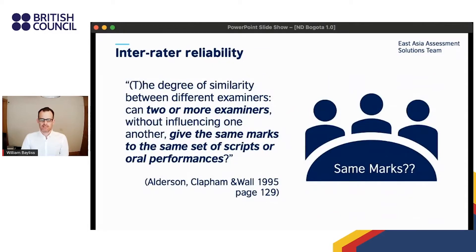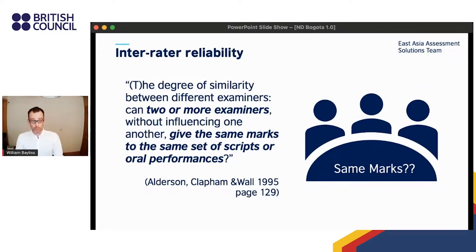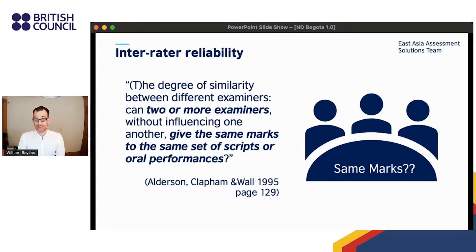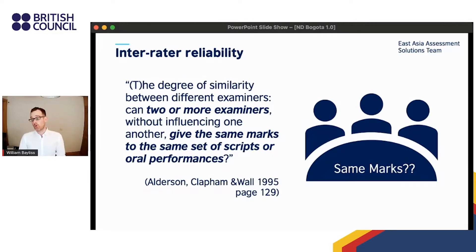Next, let's define inter-rater reliability. Anderson, Clapham, and Wall define it as the degree of similarity between different examiners. In short: can two or more examiners, without influencing one another, give the same marks to the same set of scripts or oral performances?